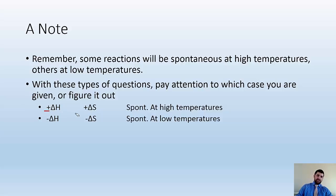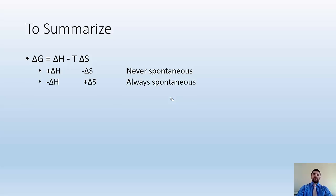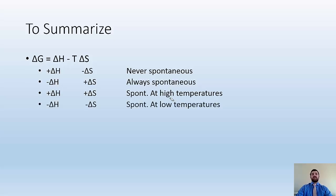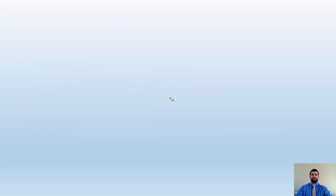Here's a pattern to help: both positive — that's a 'high' thing. Both negative — that's a 'low' thing. To summarize: delta G equals delta H minus T delta S. Positive H, negative S: never spontaneous. Negative H, positive S: always spontaneous. Positive H and S: spontaneous at high temperatures. Negative H and S: spontaneous at low temperatures. And T equals delta H over delta S is used for reactions transitioning between spontaneous and non-spontaneous at equilibrium. Hope you found that helpful. See you in class.